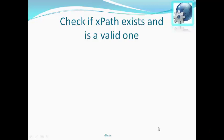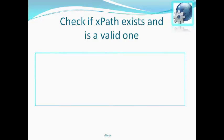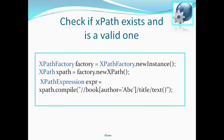To check if a particular XPath exists and is valid: first we create an XPathFactory new instance, then use that instance's newXPath function to create a particular XPath, and then use the compile method. The compile method will throw an error if the XPath is syntactically incorrect, and will not throw an error if the XPath is valid and it exists. This is how we check if an XPath is valid — we use the compile function.